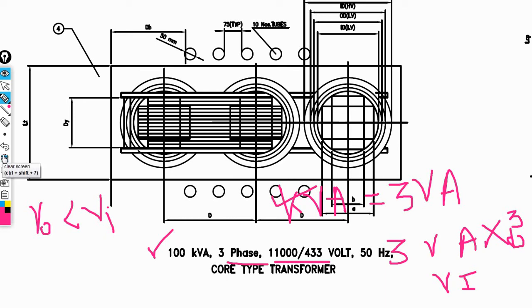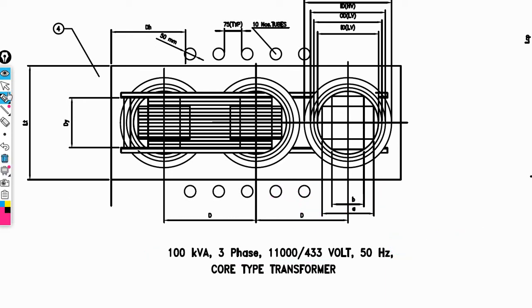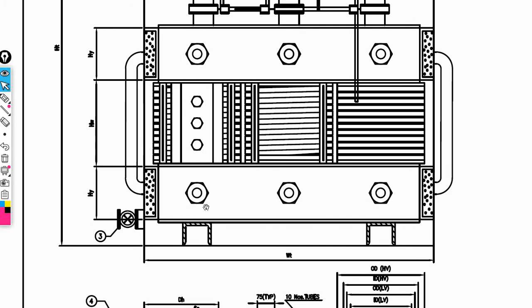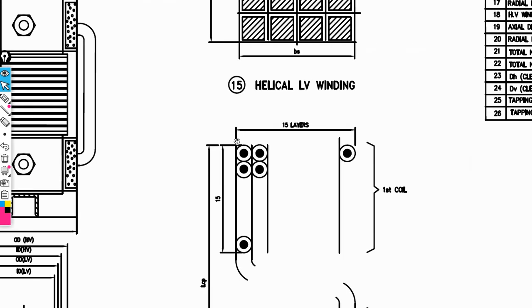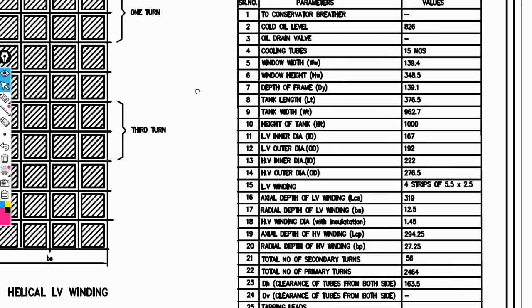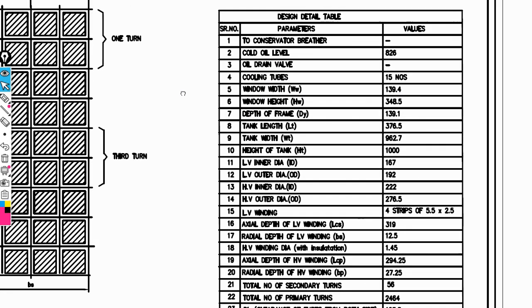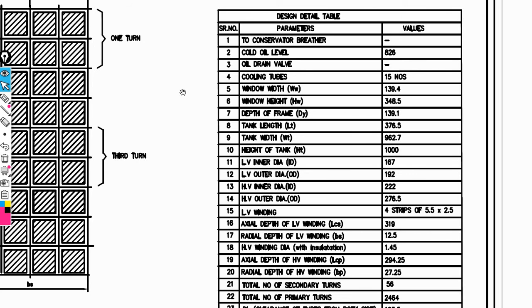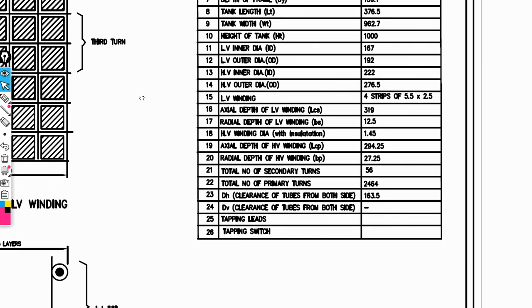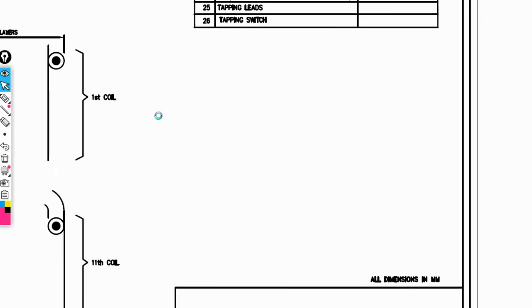This is an overview of the AutoCAD diagram, and this diagram will be drawn in AutoCAD. Several parameters are listed on the left-hand side — 26 parameters — which are very important for designing the core-type transformer in AutoCAD, with all dimensions specified.